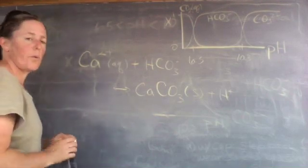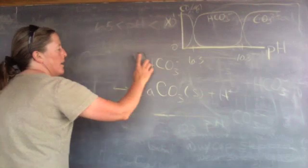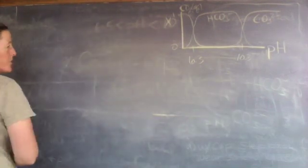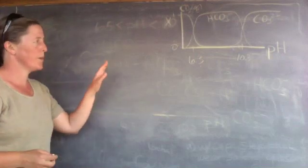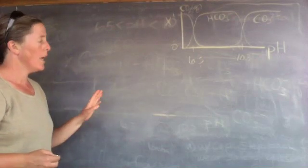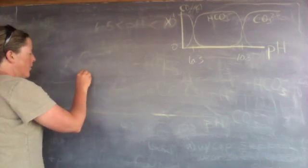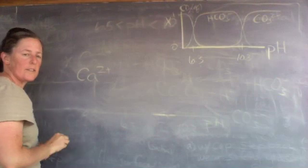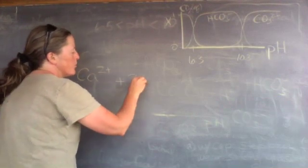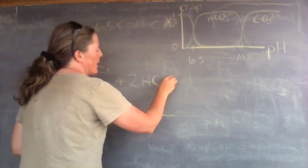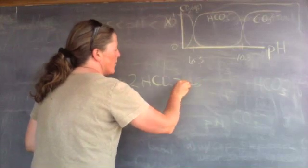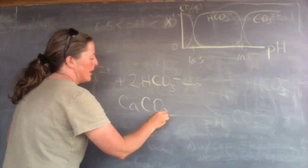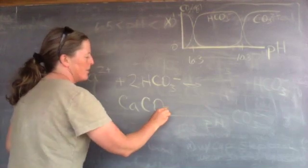Now there's another way we can write this reaction which involves two bicarbonates, and that shows a very strong connection between carbonate mineral formation and carbon dioxide. We can consider the reaction: calcium plus two bicarbonate ions reacting to form the mineral calcium carbonate solid.